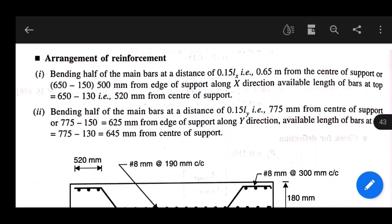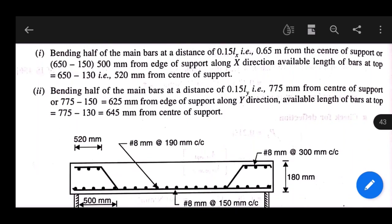As per code provision, bend half of main bars at distance 0.15 lx, equals 0.65 meters from center of support, or 650 minus 150 equals 500 mm from edge of support along x direction. Available length at top is 650 minus 130 equals 520 mm from center of support. Bend half the main bars at 0.15 ly, equals 775 mm from center of support, or 775 minus 150 equals 625 mm from edge of support along y direction.